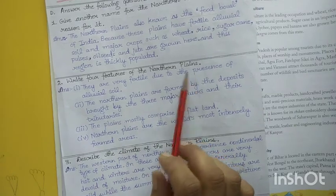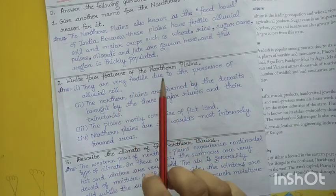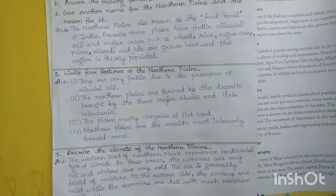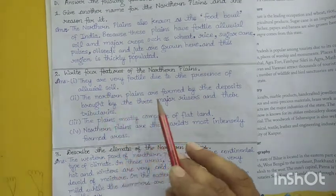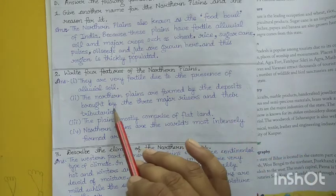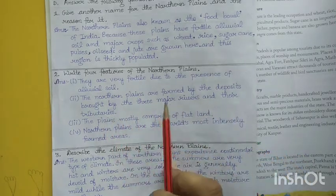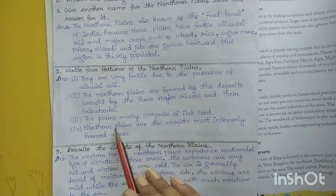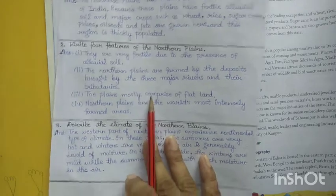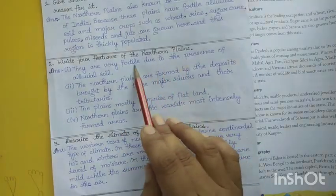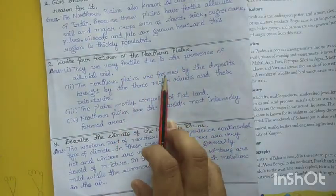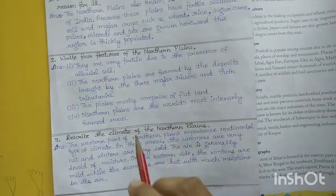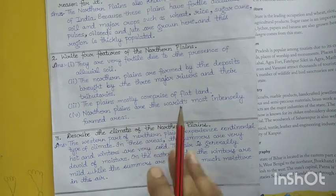Four features of the Northern Plains: They are very fertile due to the presence of alluvial soil. The Northern Plains are formed by deposits brought by the three major rivers and their tributaries. The plains mostly comprise flatland. The Northern Plains are the world's most farmed area.